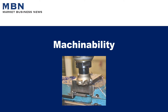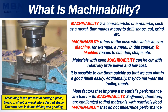What is machinability? Machinability is a characteristic of a material, such as a metal, that makes it easy to drill, shape, cut, grind, etc. Machinability refers to the ease with which we can machine, for example, a metal.